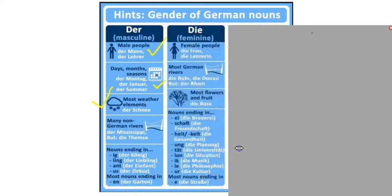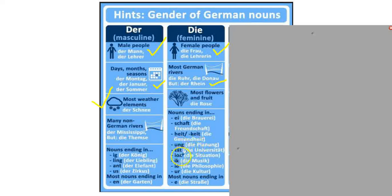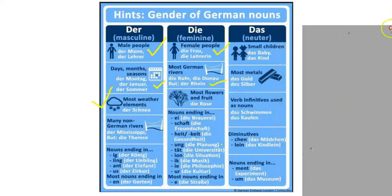For feminine nouns: female people, German rivers — like die Themse in London — flowers and fruits, and many endings: -ei, -schaft, -heit, -keit, -ung, -tät, -tion, -ik, -ur, -ung — like die Planung, die Einladung, die Überraschung — and most nouns ending in -e are typically die.